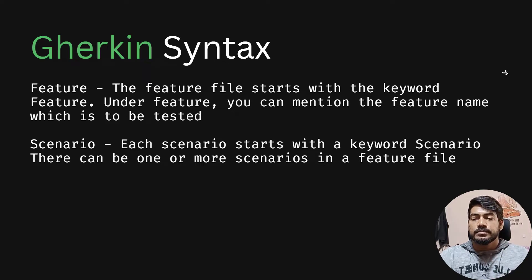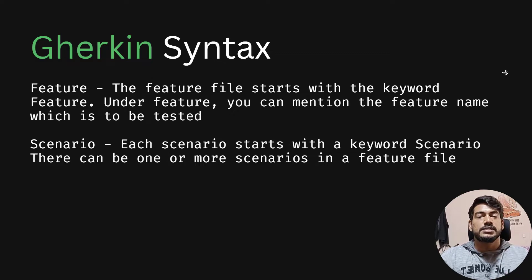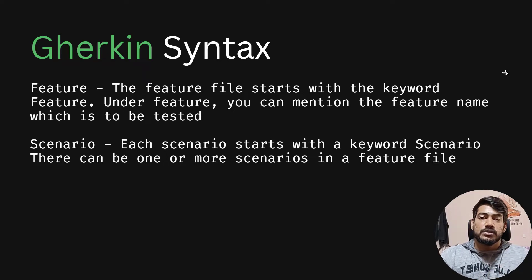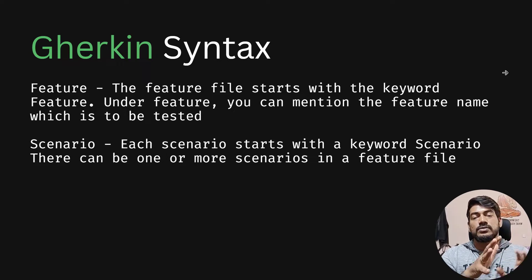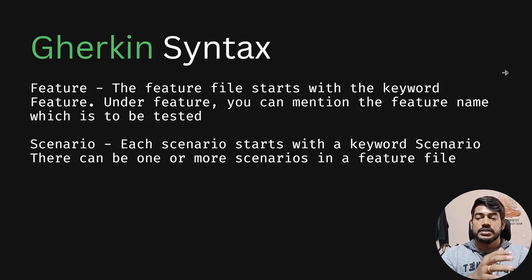All feature files start with the keyword called 'Feature'. Feature is where you mention the name of what is to be tested. Consider a login scenario — when I enter the username, when I enter the password and click on the login, then login should be success. That is one scenario. There can be one or more scenarios within a feature file. Feature is basically what all your scenarios are about — for example, login positive, login negative, add a product to cart, and checkout. All those belong to a particular feature. Feature is like your user story, whereas scenario is like your task.